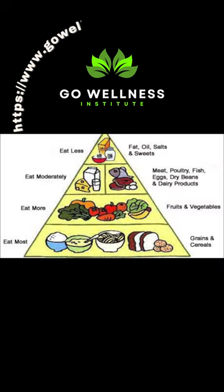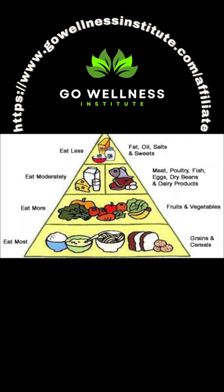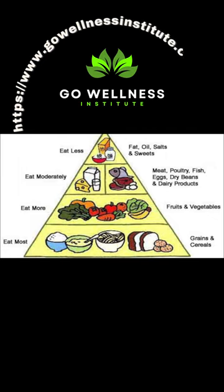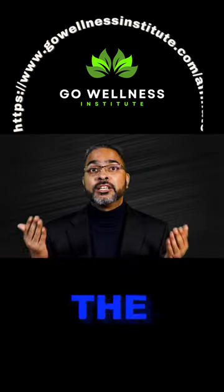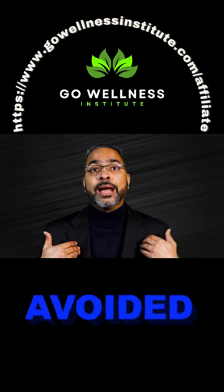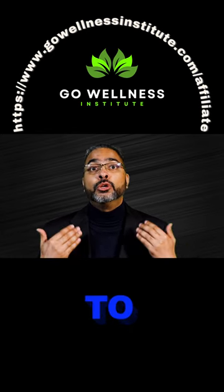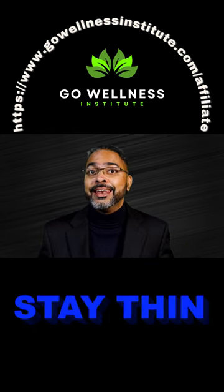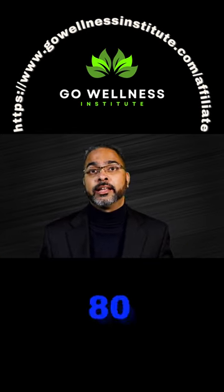So, the foods that formed the base of the food pyramid are the foods we were told to eat daily. This list included loaves of bread, plates of pasta, and potatoes — the specific foods we avoided to stay thin before 1980.